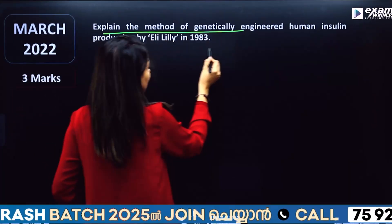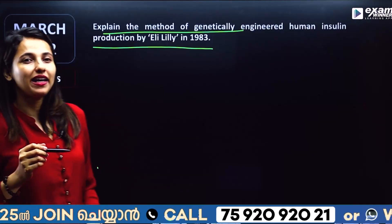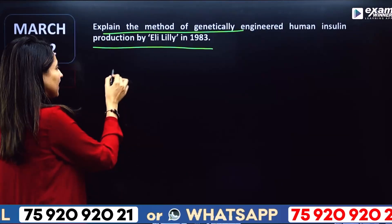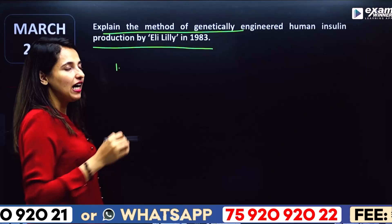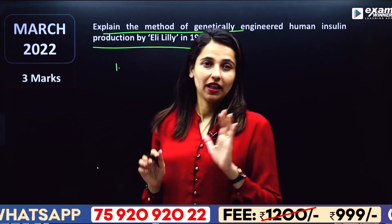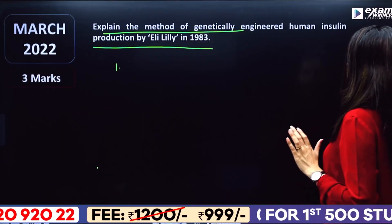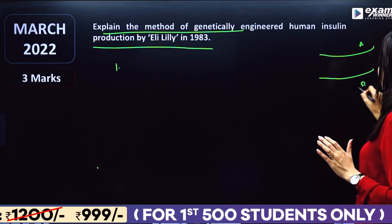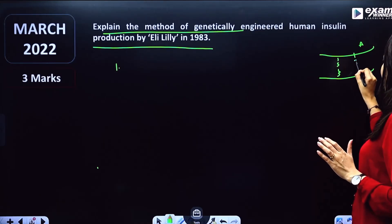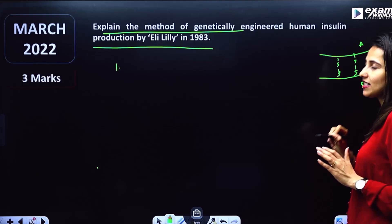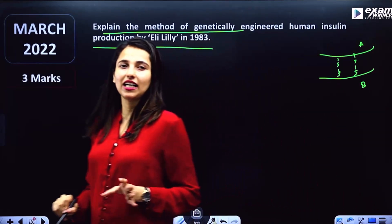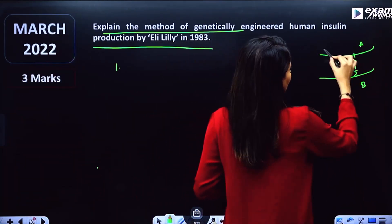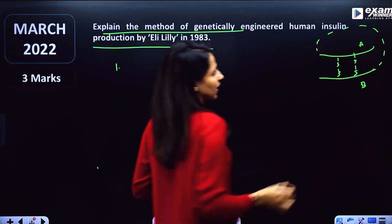Explain the method of genetically engineered human insulin produced by Eli Lilly company. They produce A and B polypeptide chains. The mature insulin structure has an A chain and a B chain connected by a disulfide bond. There is also a C chain that is removed.